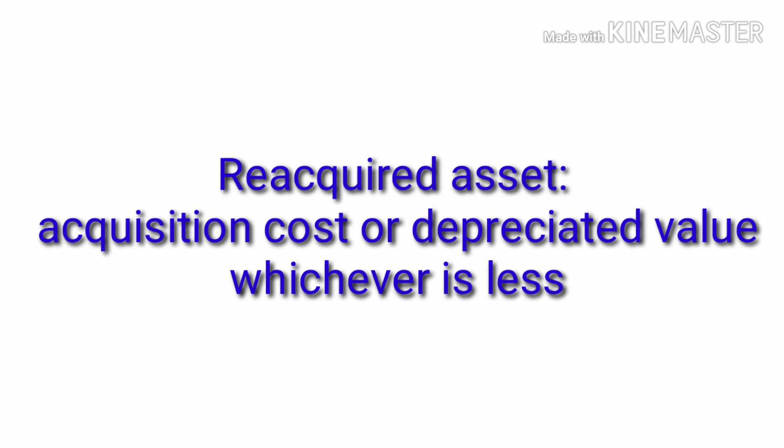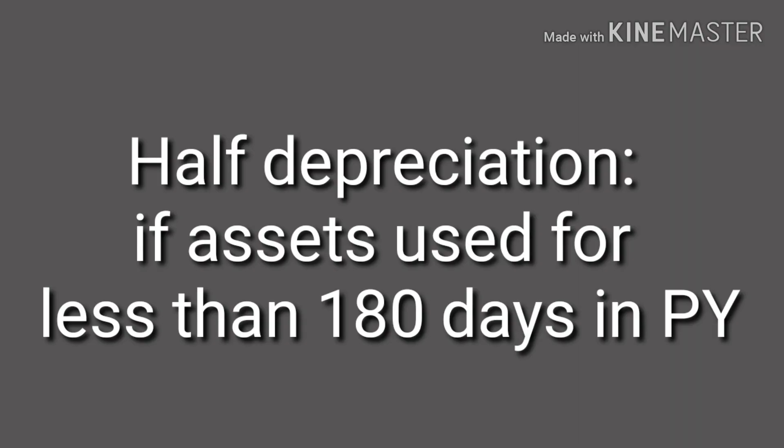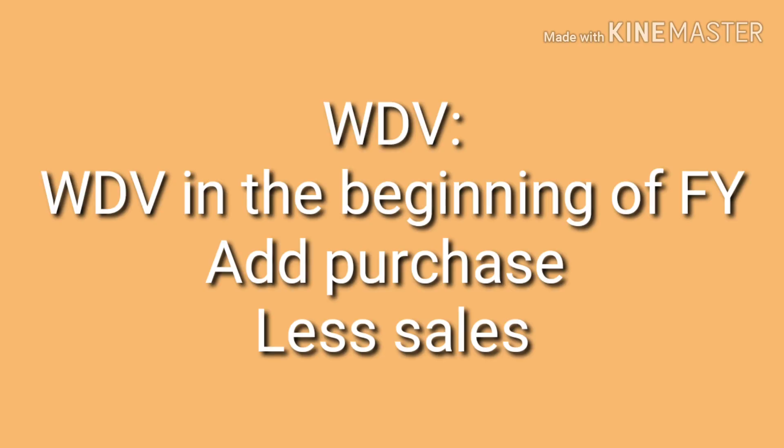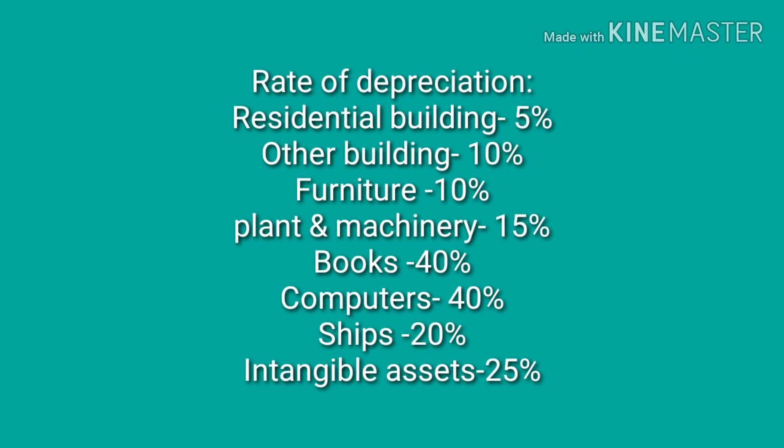Depreciation is always computed based on the actual cost. If the asset is used for less than 180 days during the previous year, only half the rate of depreciation prescribed will be allowed. Written down value is calculated as: written down value at the beginning of the financial year, add purchases, less sales including scrap value, to get written down value at the end of the financial year. Rates of depreciation: Residential building 5%, other building 10%, furniture 10%, plant and machinery 15%, books 40%, computers 40%, ships 20%, intangible assets 25%.